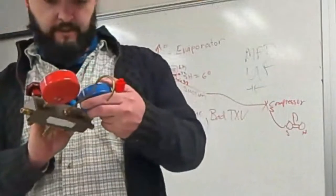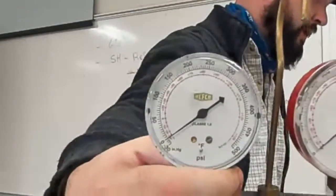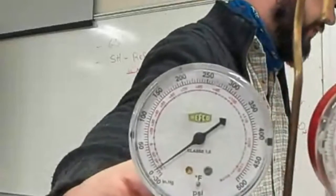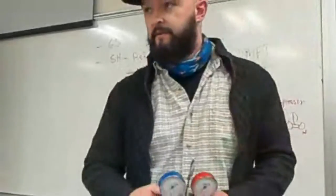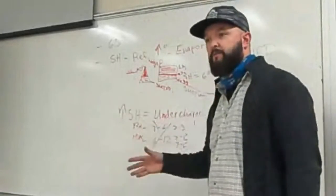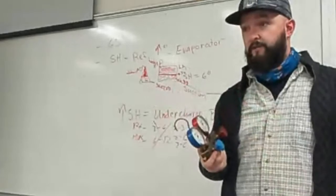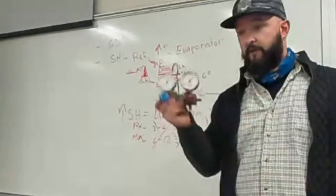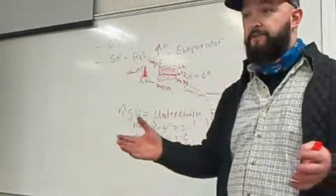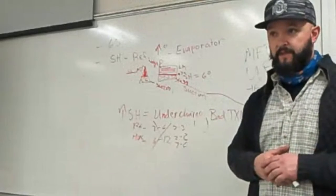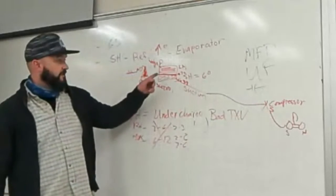So this gauge shows PSI in black and temperature in red. If we go to 100 PSI and convert that to saturation temperature, we're at 30 degrees on this coil. That obviously varies based on what refrigerant you have — that's why you have a PT chart. If you're using the correct gauges it'll convert it for you; it'll say R-404A or this one is R-410A. With digital gauges you can pick the refrigerant and it'll do the calculation automatically.